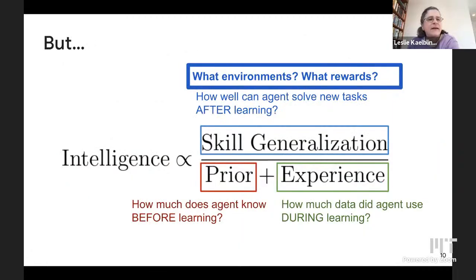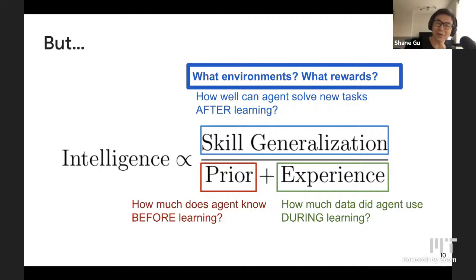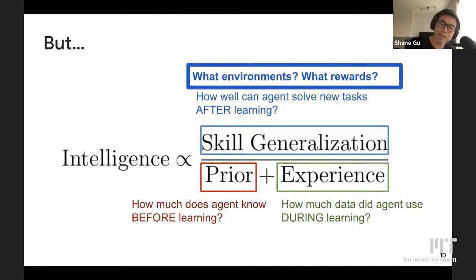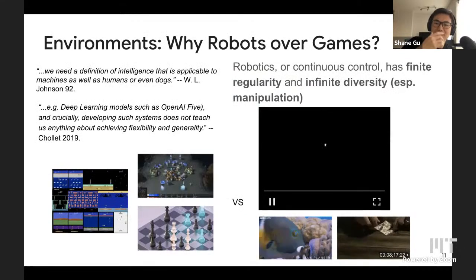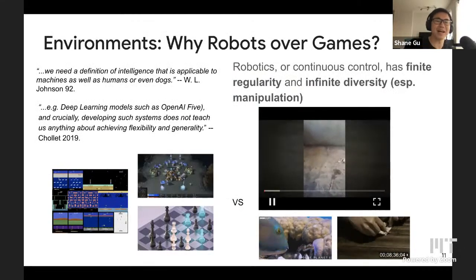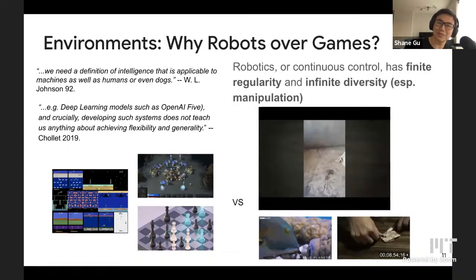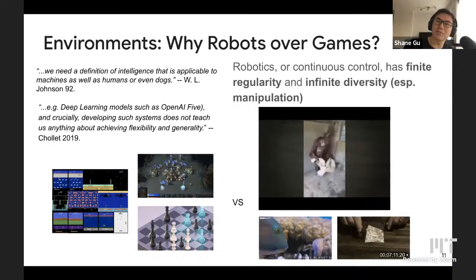Let's tackle the elephant in the room. We can control for prior and experience, but the core question is: what are the environments, and what are the rewards? Most attempts before were based on algorithmic complexity, using environments procedurally generated from string complexity. My bias is that robotics provides very good environments to study more general intelligence than games, supported by Shane Legg's call for a definition of intelligence applicable to machines, humans, and dogs.